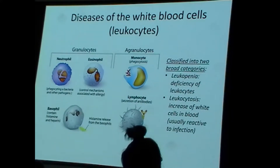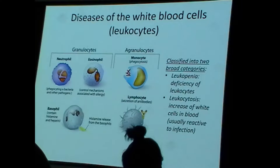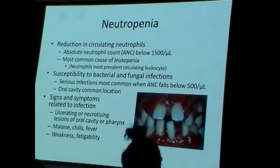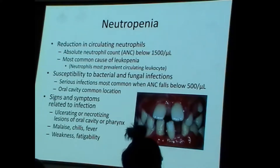When we talk about diseases of white blood cells, we generally classify them into leukopenia or leukocytosis, depending on whether there's a relative deficiency or overproduction of white blood cells. Let's first talk about neutropenia.